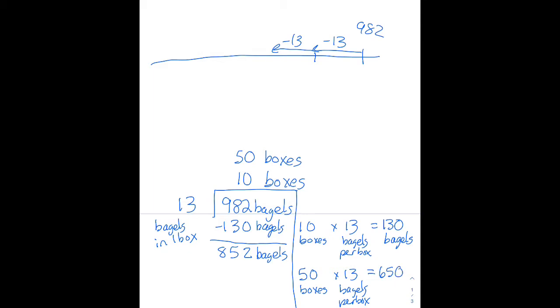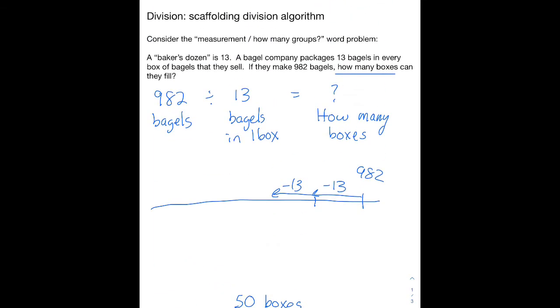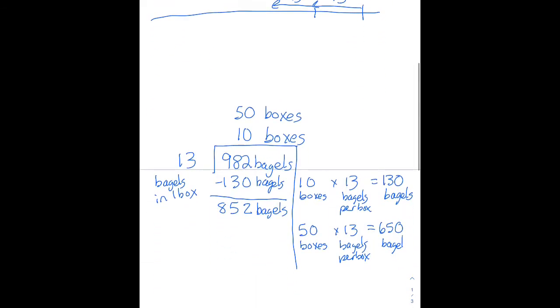So I'm going to go with 50 boxes times 13 bagels per box equals, let's see, 5 times 13 is 65, so 650 bagels. 650 bagels got used up for those 50 boxes, and I have 202 bagels left to package.